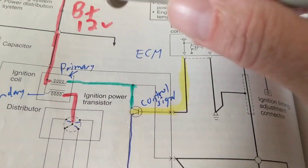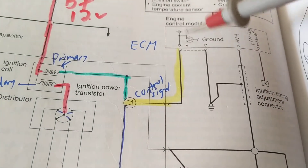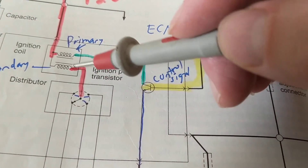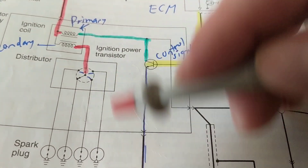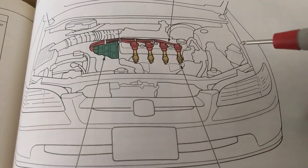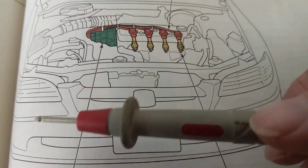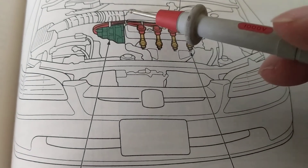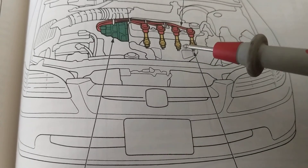If there's a spark up to the secondary, that means the computer is working, I have 12 volts, all the sensors gave their inputs, the computer gave an output, and the ignition coil is working. So what's the problem? Work on the distributor. Here's a picture of Hondas and Toyotas — the distributor is right here and it goes to spark plug wires and the spark plugs.